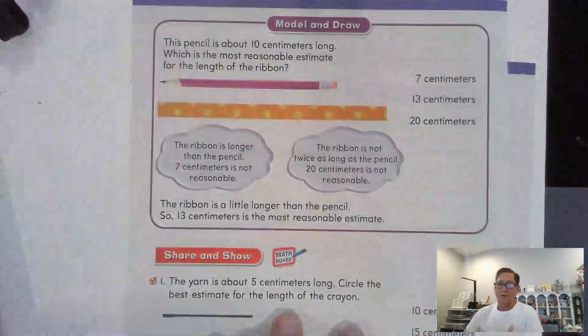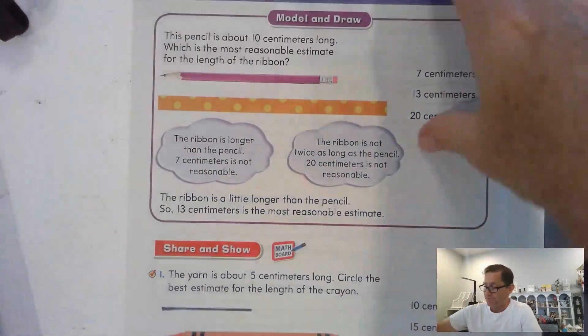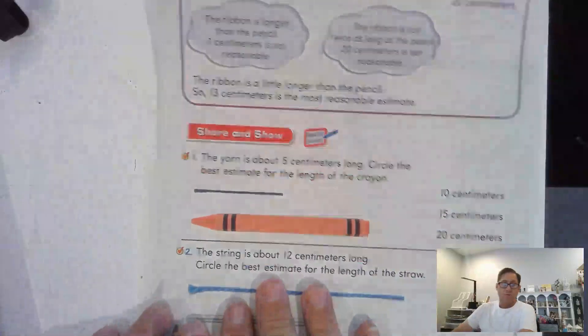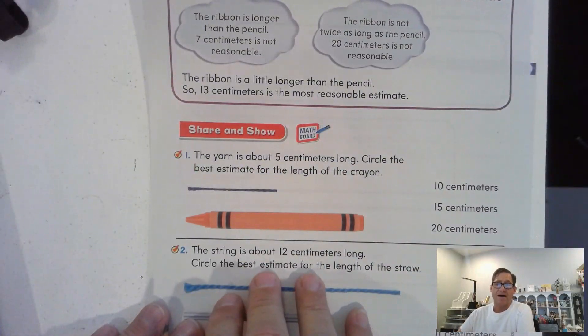So that's kind of what we're going to be doing today. Alright? So, let's look at number 1. The yarn is about 5 centimeters long. Circle the best estimate for the length of the crayon.